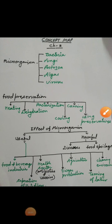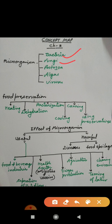Good morning students, today I am here with the concept map of chapter number two — Microorganism: Friend or Foe. You have to note down this concept map in your notebook. Microorganisms are of five types: bacteria, fungi, protozoa, algae, and viruses.